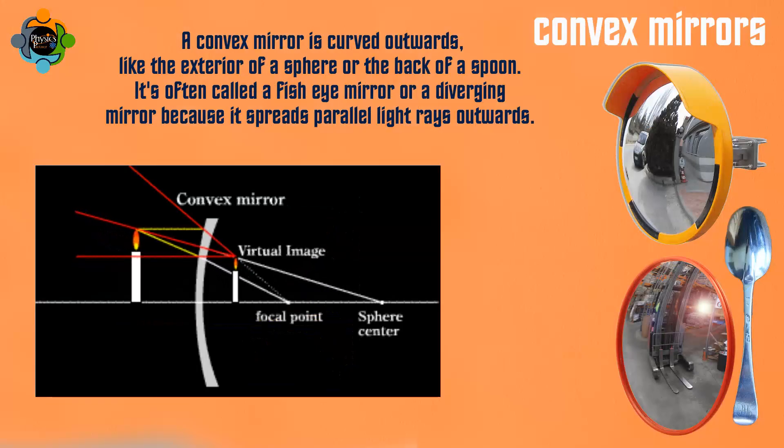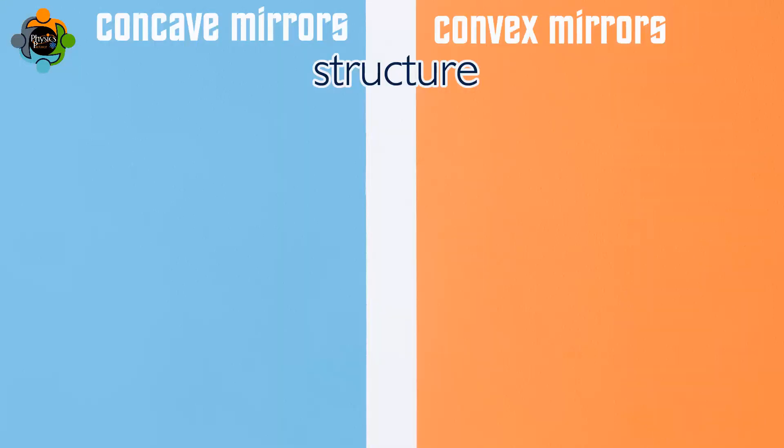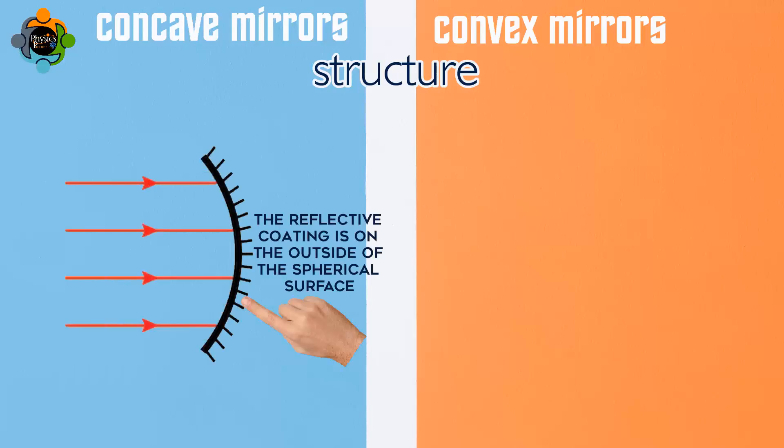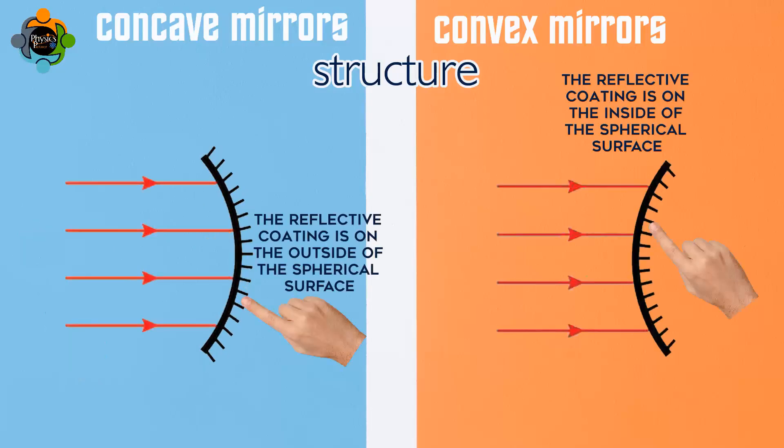One key difference lies in their structure. For a concave mirror, the reflective coating is on the outside of the spherical surface, and its center of curvature is on the same side as the reflecting surface. However, for a convex mirror, the reflective coating is on the inside of the spherical surface.